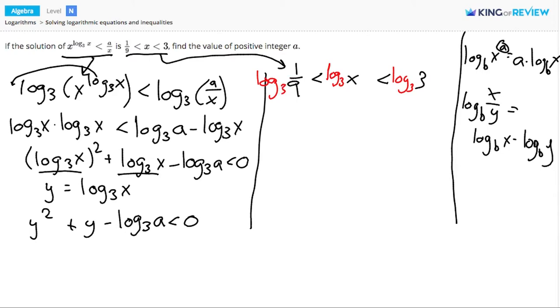So let's see what we get. The log base 3 of 1 ninth is negative 2, since 3 to the negative 2 power is 1 ninth. The log base 3 of x is what I'm calling y. And the log base 3 of 3 is 1, since 3 to the first power is 1.